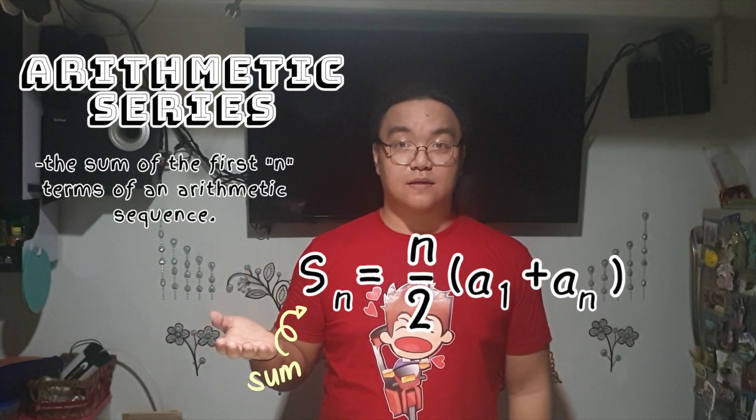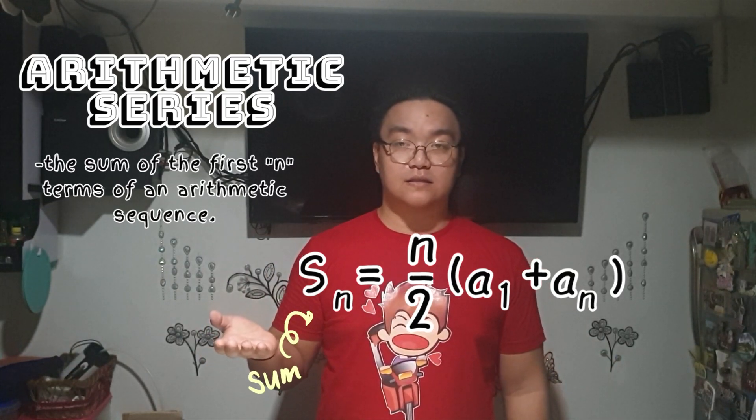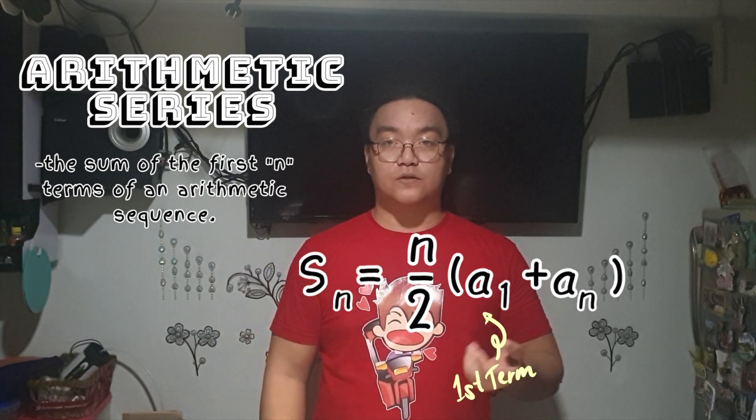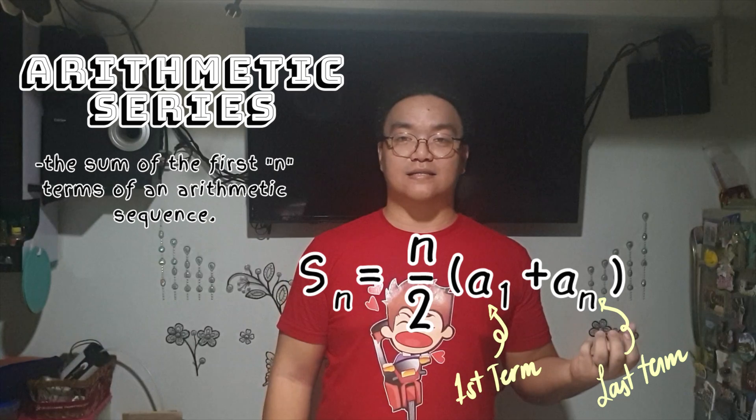Where S sub n is the sum of the given terms of an arithmetic sequence, n is the number of terms, A sub 1 is the first term, and A sub n is the last term.